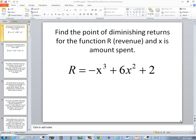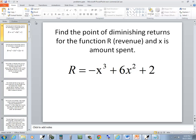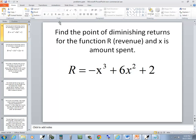In this problem, we want to find a point of diminishing returns to the function r, revenue, and x is the amount spent. So we've got r is equal to negative x to the third plus 6x squared plus 2.